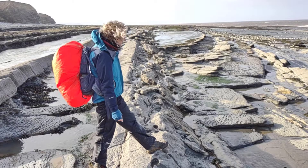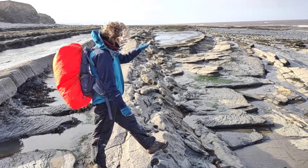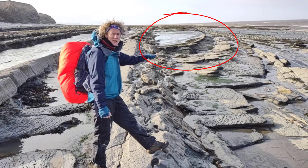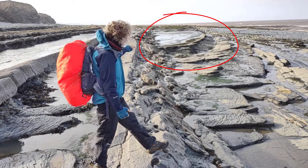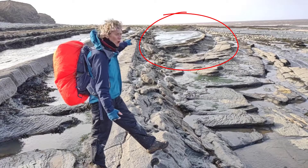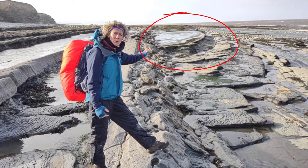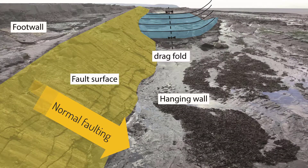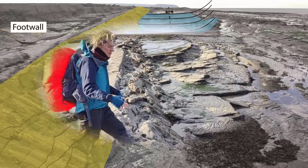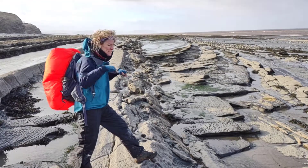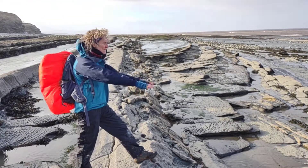In the hanging wall of this structure, the limestone beds are folded into a kind of little bowl and you can see that we've got a big rock pool in that bowl. That's a little drag fold as the hanging wall has moved down, because we can see that the limestone units I'm stood on have been displaced downwards.